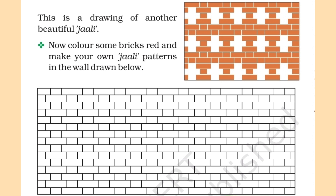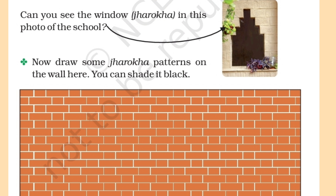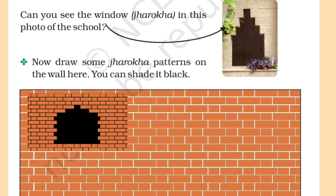This is a drawing of another beautiful jali. See that image — they have drawn a jali. Now color some bricks red and make your own jali pattern in the wall drawn below. I will show you an example of a jali so you can make your own design. You can also draw jaroka patterns — to make a window, some bricks are removed from the middle of the wall to create a design known as a jaroka. You can shade it in black.